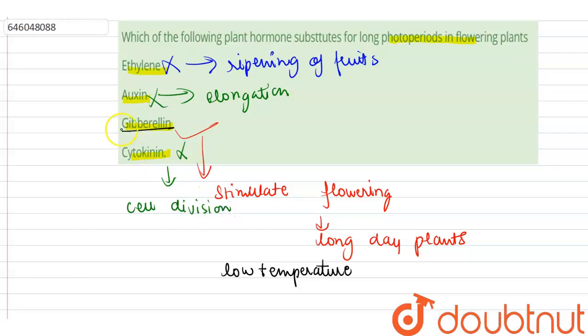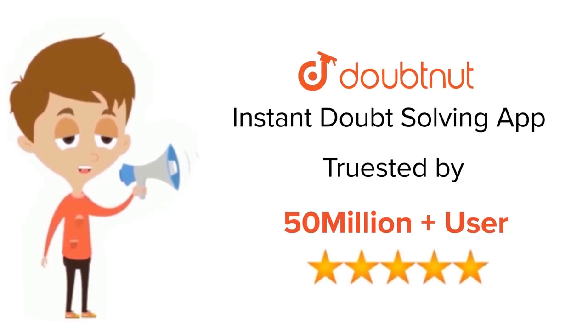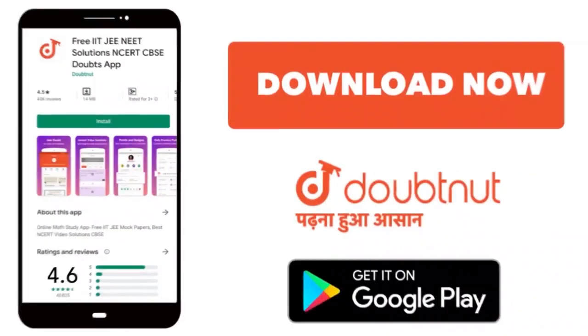So this is also incorrect. The correct option is gibberellin. Thank you. For class 6 to 12th, IIT-JEE and NEET level, trusted by more than 5 crore students. Download Doubtnut app today.